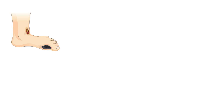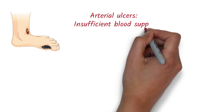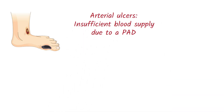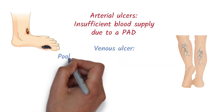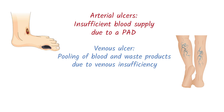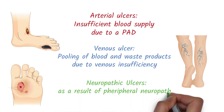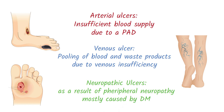Arterial ulcers are due to insufficient blood supply due to peripheral artery disease. Venous ulcers are due to pooling of blood and waste products due to venous insufficiency. And neuropathic ulcers are a result of peripheral neuropathy, mostly caused by diabetes mellitus.